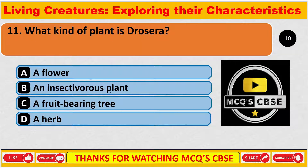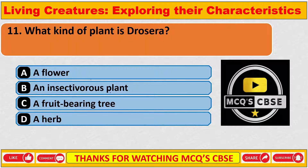What kind of plant is Drosera? The correct answer is B — an insectivorous plant.